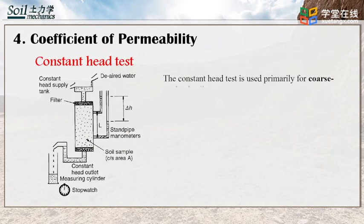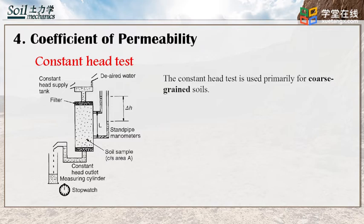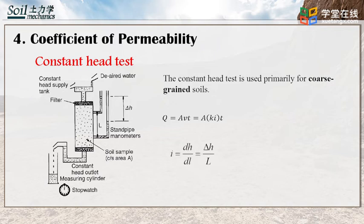The constant head test is used primarily for coarse-grained soil. A typical arrangement of the constant head permeability test is shown in the figure. In this test, the water supply at the inlet is adjusted so that the difference of head between the inlet and outlet remains constant during the test period. After a constant flow rate is established, water is collected in a graduated flask for a known duration. The total volume of water Q collected can be expressed as Q equals A times V times T, or A times K times I times T, where A is the area of the cross-section of the soil specimen and T is the duration of water collection. The hydraulic gradient I equals delta H over L. The flow rate is expressed as equation 1, and therefore the coefficient of permeability can be obtained as equation 2.